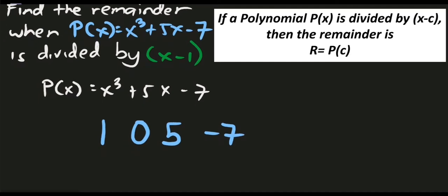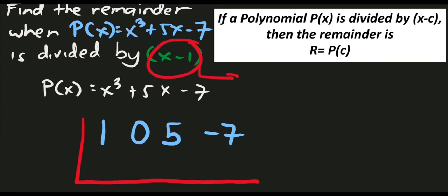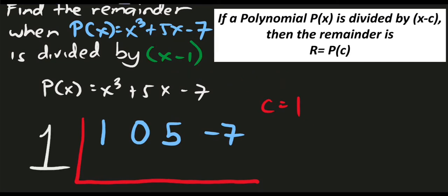Let's construct a line and identify the value of c for our divisor. Since our divisor is x minus 1, and we have x minus c, we use the technique of changing the sign, so the value of c is positive 1. Let's use positive 1 as our divisor and proceed.